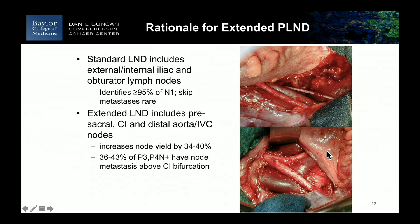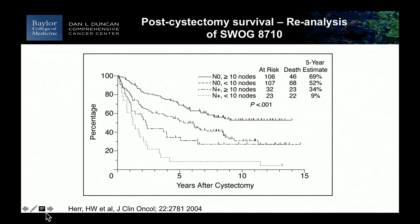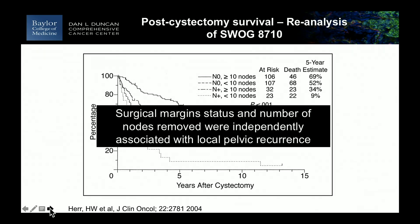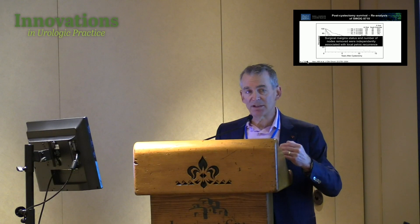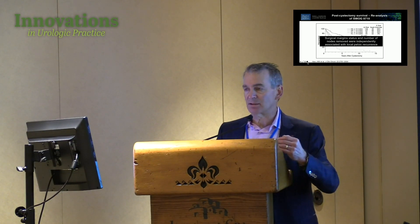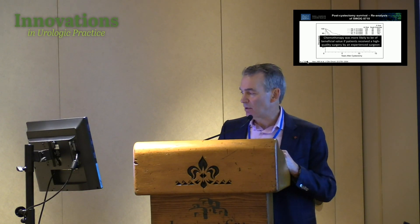What some people refer to as super-extended goes up to the IMA. It's debated whether going above the aortic bifurcation adds anything beyond identifying more lymph nodes. The analysis of SWOG 8710, the neoadjuvant chemotherapy trial, also showed that surgical quality affects outcome in both node-negative and node-positive disease — patients with more nodes identified had better outcomes — and surgical margin status was independently associated with local pelvic recurrence.